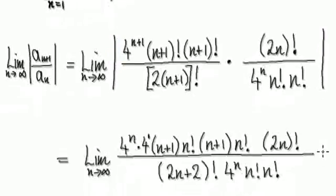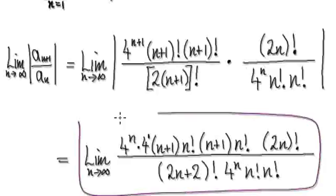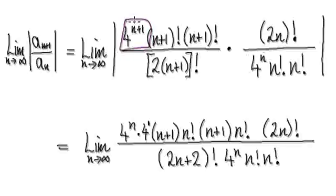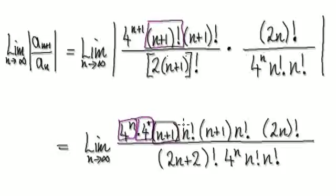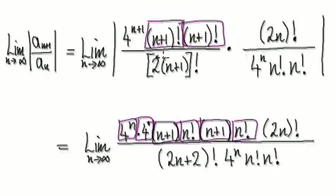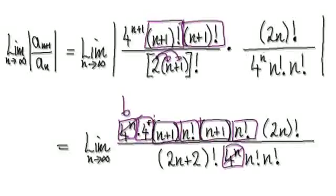That will then take us to here, and then visualize this as being one block multiplying another block. Visualize n+1 factorial — it's really n+1 times n factorial. Visualize this block as being (n+1) times n factorial, and then multiply this out. You can now see that 4 to the power of n will cancel out with this, and n factorial will cancel out with this.